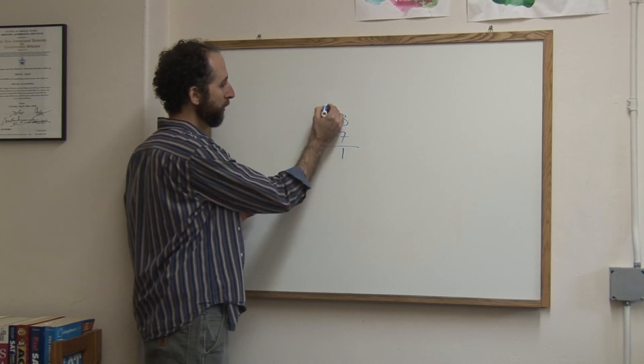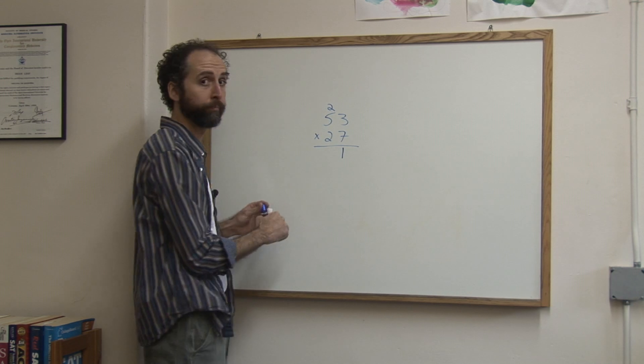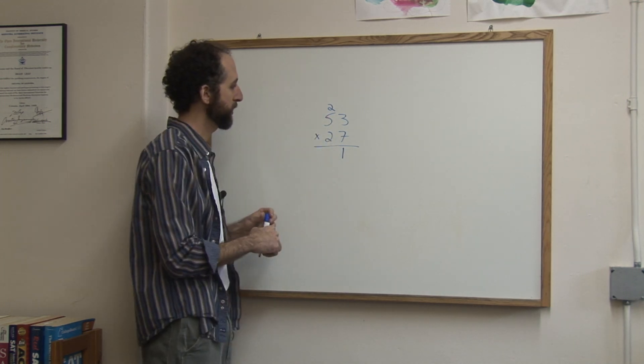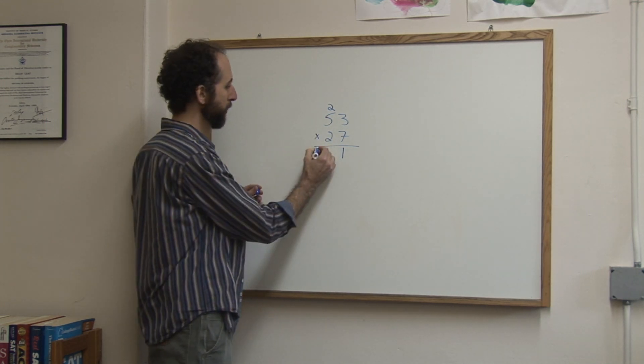So 7 times 3 is 21, you carry the 2. 7 times 5 is 35, add the 2, it's 37.